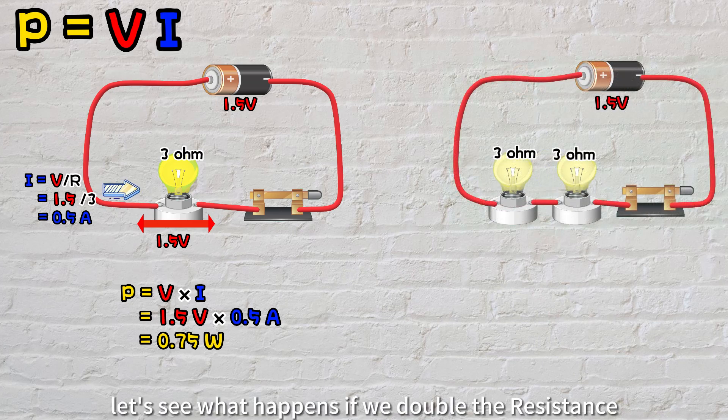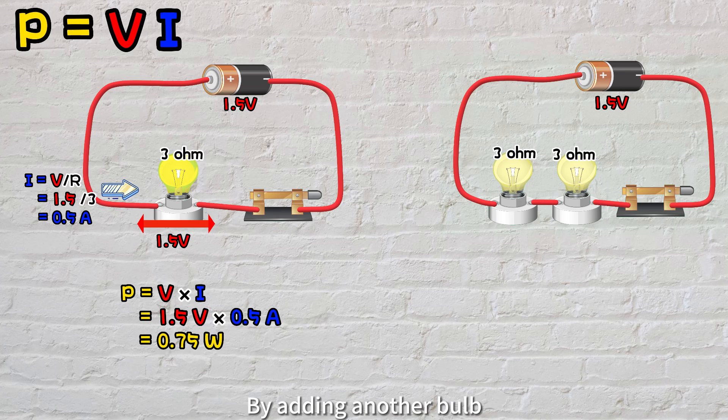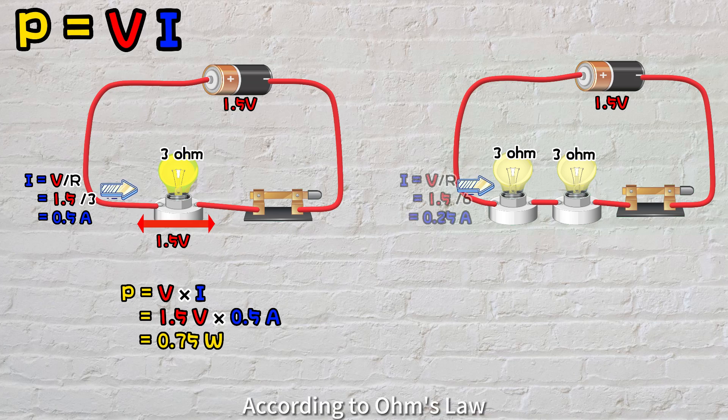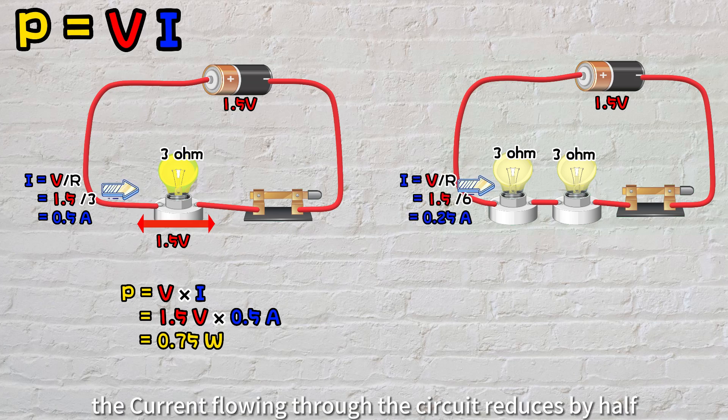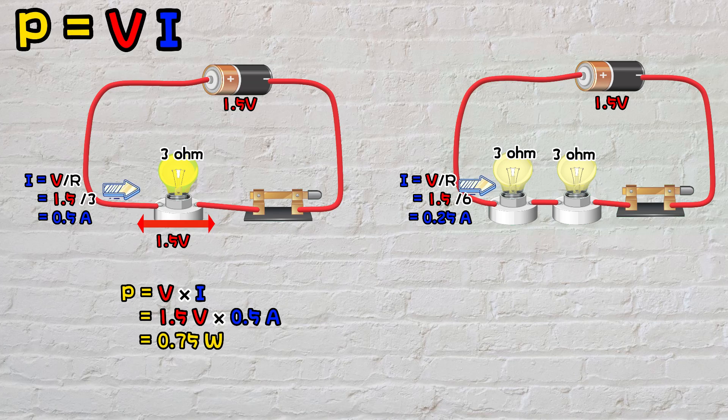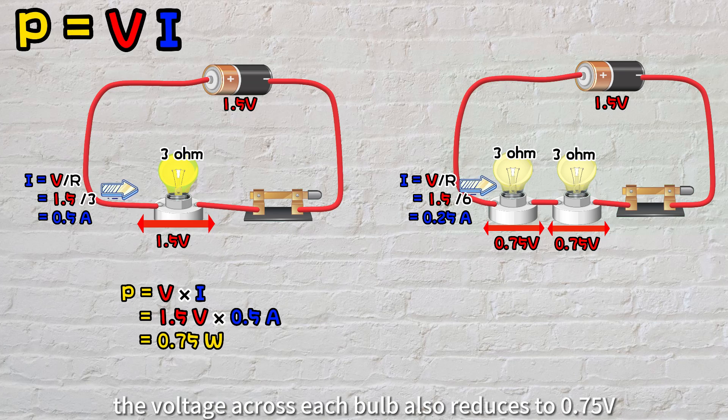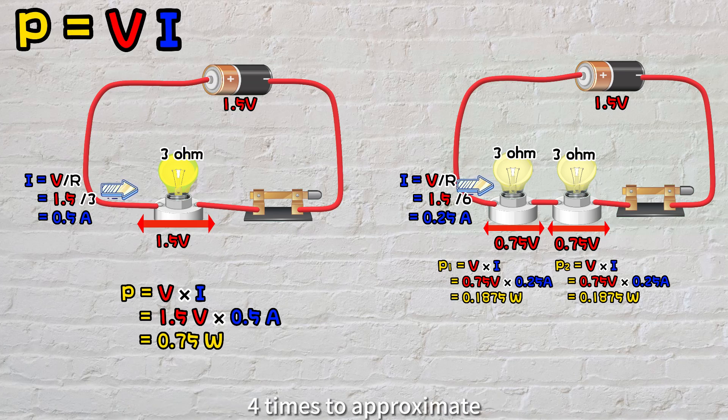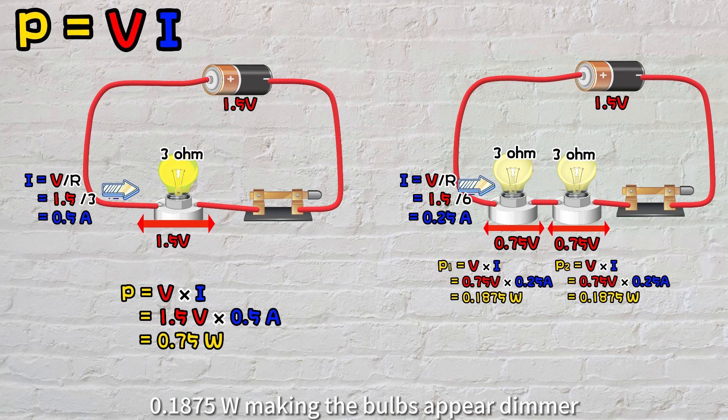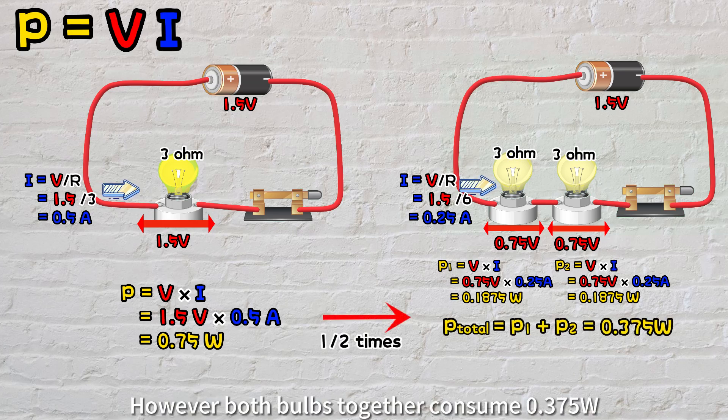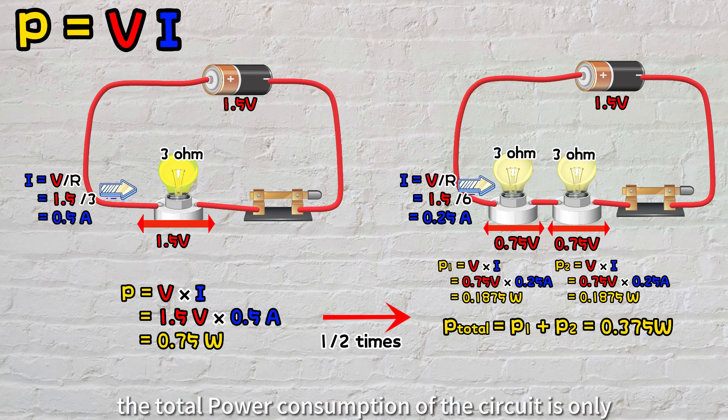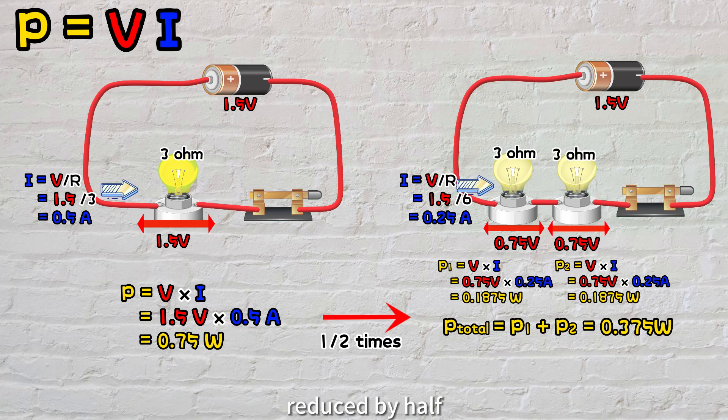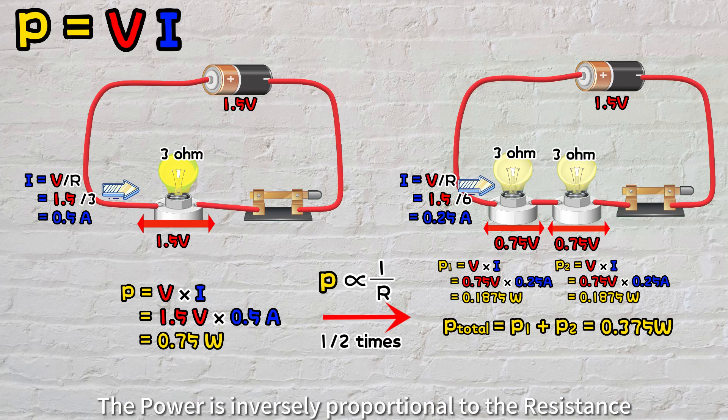On the other hand, let's see what happens if we double the resistance of the circuit by adding another bulb while keeping the original source voltage at 1.5 volts. According to Ohm's law, the current flowing through the circuit reduces by half to 0.25 amps. The voltage across each bulb also reduces to 0.75 volts. Therefore, the power consumption by each bulb decreases by 4 times to approximately 0.1875 watts, making the bulbs appear dimmer. However, both bulbs together consume 0.375 watts. Therefore, the total power consumption of the circuit is only reduced by half. The power is inversely proportional to the resistance.